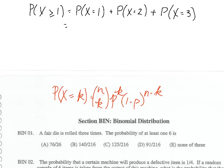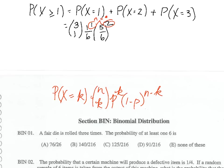We want to calculate the probability of one success. That's C(3,1) — the number of ways of seeing one success out of three tries — times (1/6)^1, the probability of a success, times (5/6)^2, since there's one success there must be two failures to total n=3. Those exponents must sum to three, and the probabilities must sum to one.